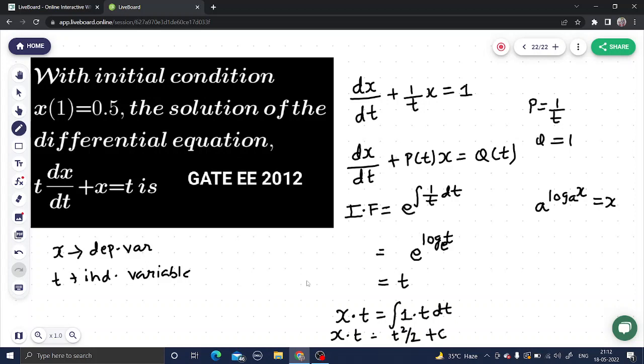In order to find this constant, we have been given one condition: if you put t equals 1, x will be 0.5. So x equals half when you put t equals 1, that means 1 squared by 2